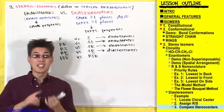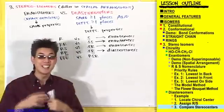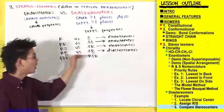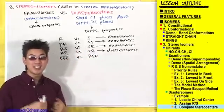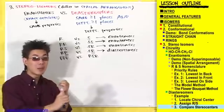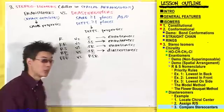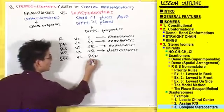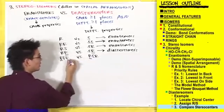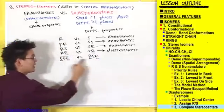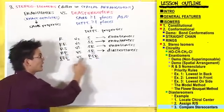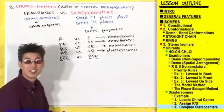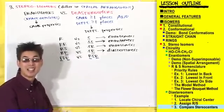One more example: RRR versus RSR. These two compounds are the same at one or more places and different at one or more places. At the first stereocenter both are R, and at the third stereocenter both are R, but at the second stereocenter this one is R and this one is S. They're the same at two places but different at another, making these also diastereomers.